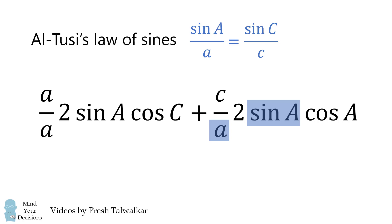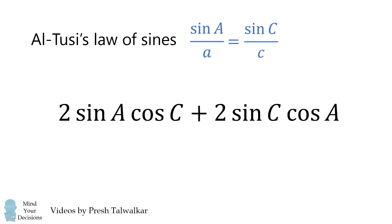In the second term, we have sine A over a, and we'll substitute in sine C over c. This makes a over a cancel and c over c cancel. We then simplify and factor out the 2.